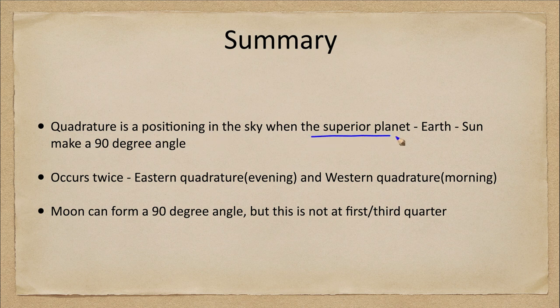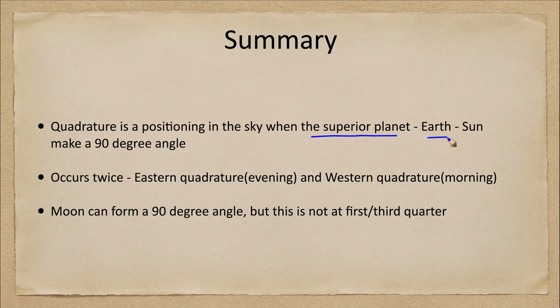Well, it is when the superior planet and the earth and the sun, these three objects make a 90 degree angle. It occurs twice, once in the evening and once in the morning sky as the planet orbits, and the moon can also form a 90 degree angle.